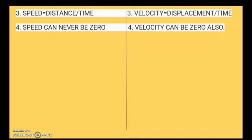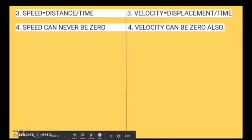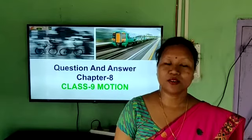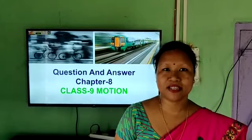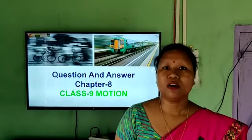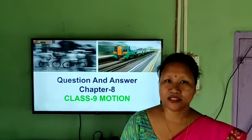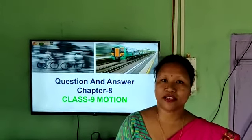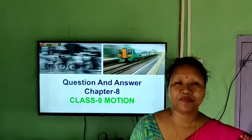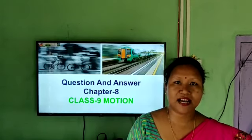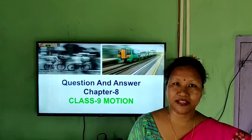Point four: speed can never be zero and can never be negative; but velocity can be zero and also can be negative. So these were some important questions and answers. Hope you have understood all those questions and answers — note them down in your notebook so that it will be easy for you to study. In our next class, I will be taking up a new chapter. Thank you.